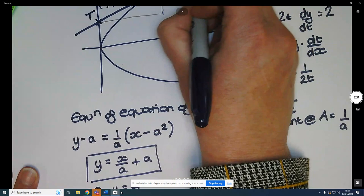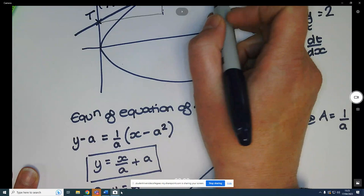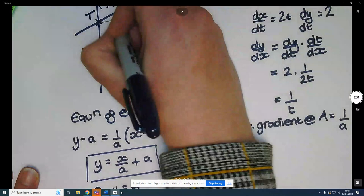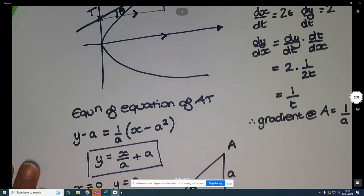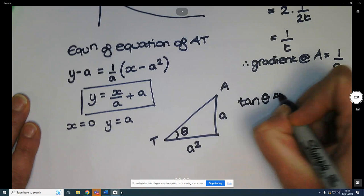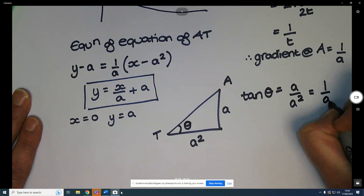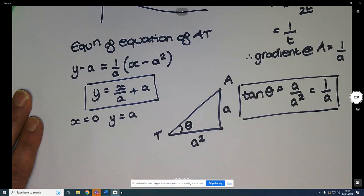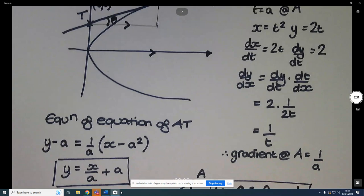And we've got, if that angle there is theta as in the diagram, this line here is parallel to your x-axis, so it's also parallel to this line here. So that angle there must also be theta. So we can say from there tan theta is equal to opposite over adjacent, so a over a squared, which is 1 over a. And that's the result that we were after from the question. That's what we're trying to show.